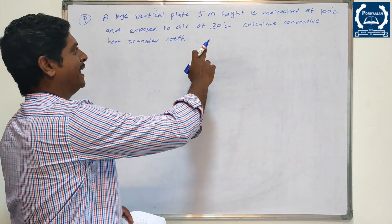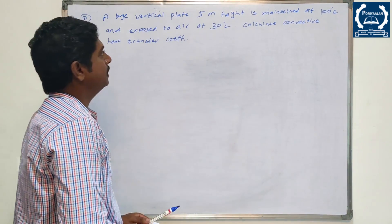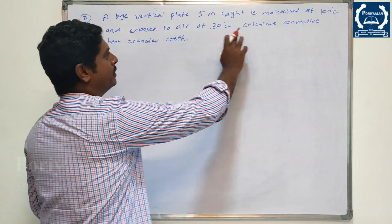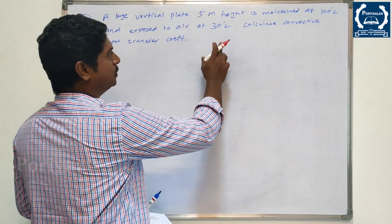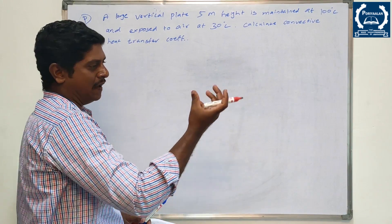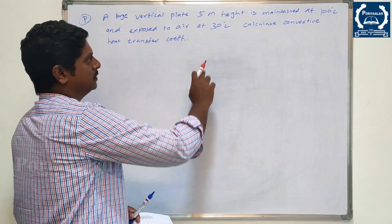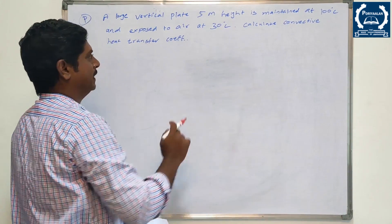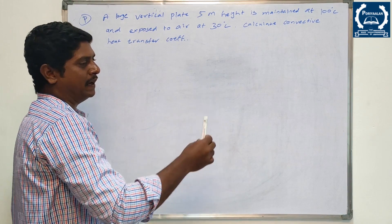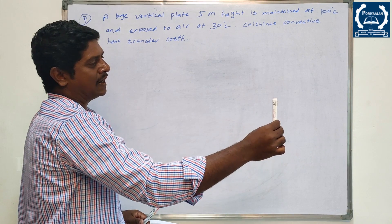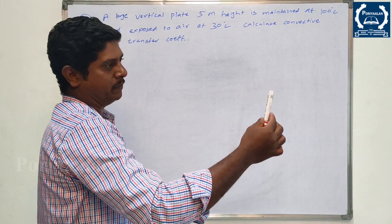A plate is exposed to air at 30 degrees Celsius. The plate is 5 metres in height. The plate temperature is 100 degrees Celsius and it is exposed to air at 30 degrees Celsius. It is a vertical plate. Calculate the convective heat transfer coefficient H.